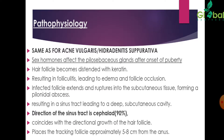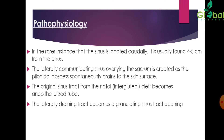Pathophysiology is the same as for acne vulgaris and hidradenitis suppurativa. Sex hormones affect the pilosebaceous glands after onset of puberty. The hair follicle becomes distended with keratin, resulting in folliculitis, leading to edema and follicle occlusion. The infected follicle extends and ruptures into the subcutaneous tissue, forming a pilonidal abscess, resulting in a sinus tract leading to a deep subcutaneous cavity. The direction of the sinus tract is cephalad, coinciding with the directional growth of the hair follicle, placing the tracking follicle approximately 5 to 8 cm from the anus.